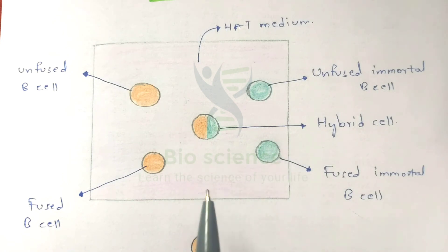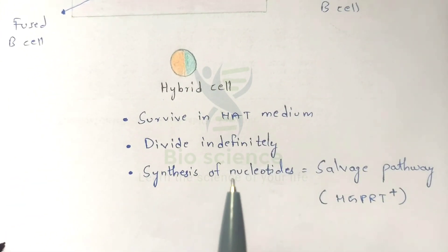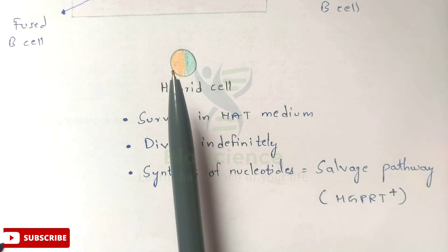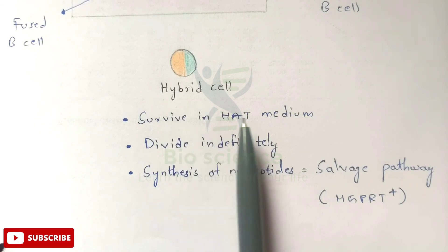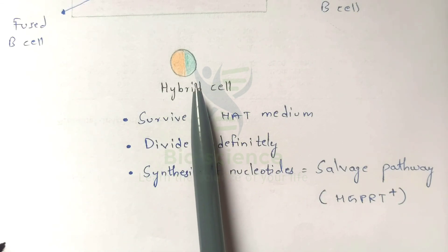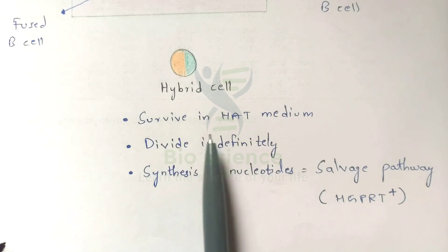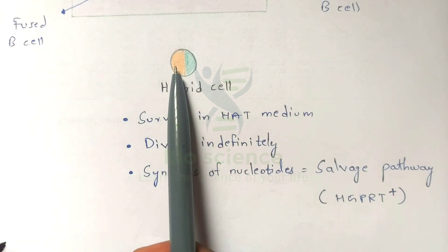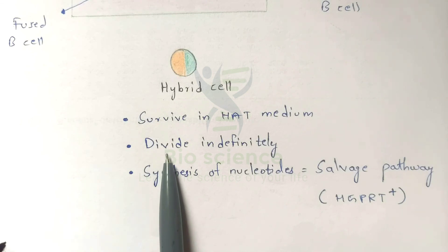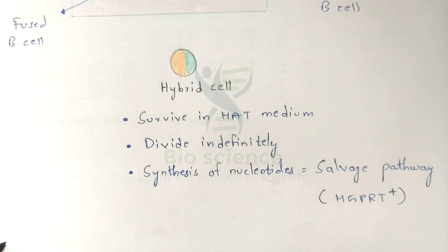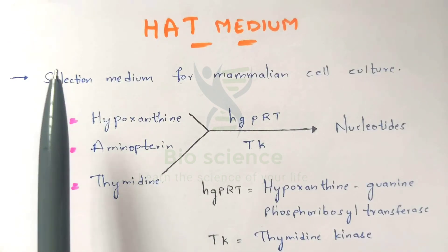The hybrid cell survives in HAT medium because it possesses properties of both parent cells. From the immortal B cell, it gains the ability to divide indefinitely. From the antibody-producing B cell, it gains the functional (non-mutant) HGPRT enzyme, allowing it to synthesize nucleotides via the salvage pathway. This combination allows the hybrid cell to thrive in HAT medium.